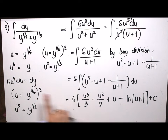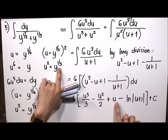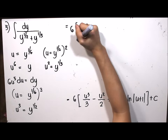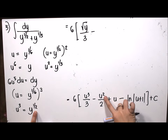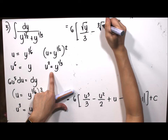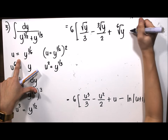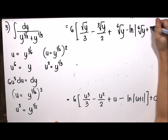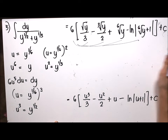Applying integration: 6 times the integral of u squared minus u plus 1 minus 1 over u plus 1 du gives 6 times u cubed over 3 minus u squared over 2 plus u minus ln of u plus 1, plus C. Substituting back with u equals y to the 1/6, u cubed equals y to the 1/2, u squared equals y to the 1/3, and u equals y to the 1/6, the final answer is 6 times square root of y over 3 minus cube root of y over 2 plus sixth root of y minus ln of the sixth root of y plus 1, plus C.